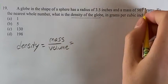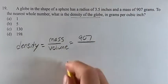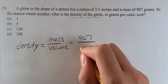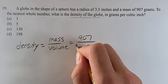We're given the mass, it's 907, and we know that the volume of a sphere is pi r cubed times 4 thirds.